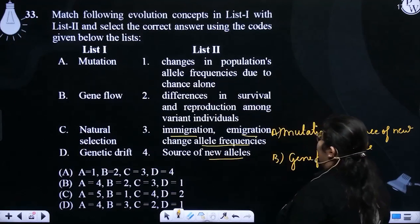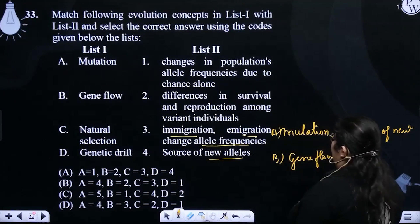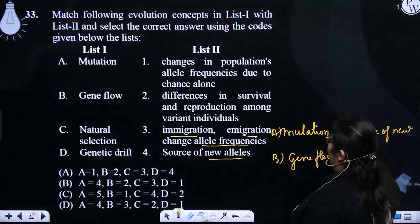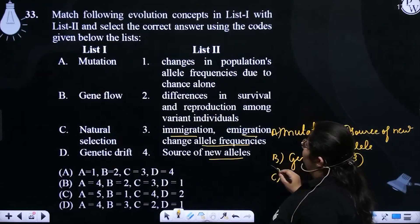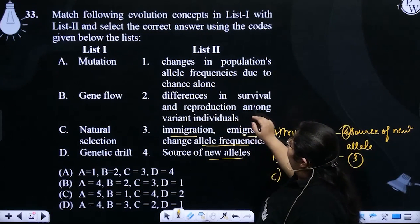So gene flow matches with three, that is immigration. And natural selection—natural selection is differences in...